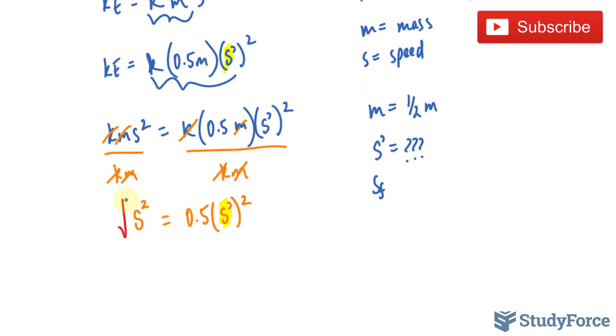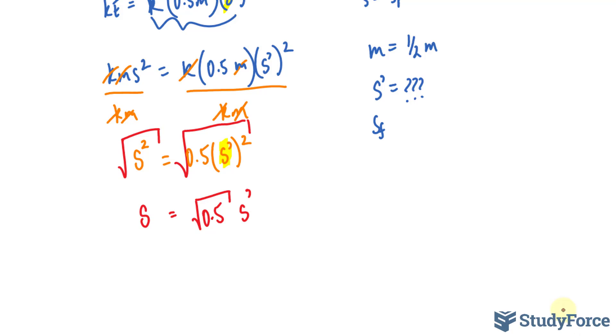What I would do from here is square root both sides. If I square root both sides, the square root here and this two will cancel each other out, leaving us with simply S, and this square root and this square will cancel out, leaving me with the square root of 0.5, and this part has become S prime. One more step and I have my S prime. All I have to do is divide both sides now by the square root of 0.5, leaving us with S over the square root of 0.5 is equal to S prime.